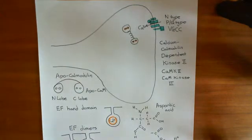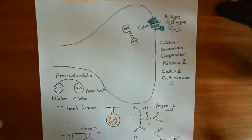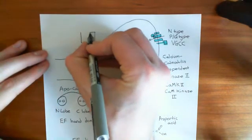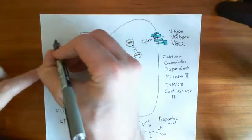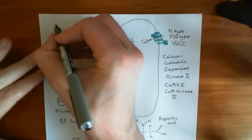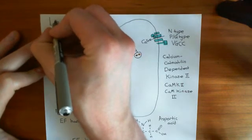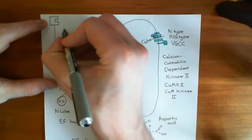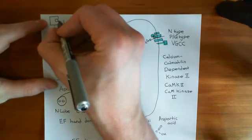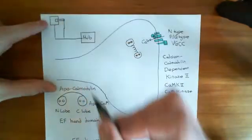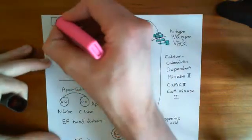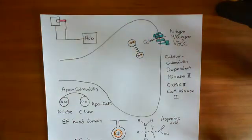Let me describe the structure of CaM kinase 2. A single enzyme subunit has a hub region, a linker region, and the actual kinase domain. The kinase domain is the part capable of phosphorylating substrates. Off the linker there is also a portion known as the pseudosubstrate, which sticks into the active site of the kinase domain and inhibits it. So this is one calcium-calmodulin-dependent kinase 2 protein.